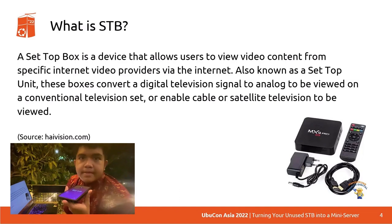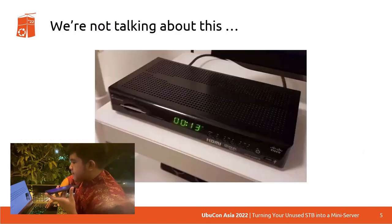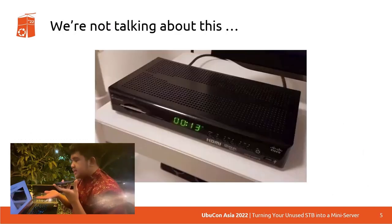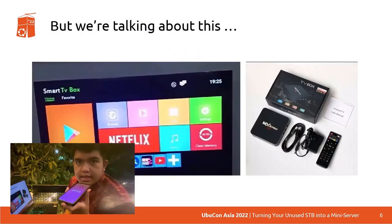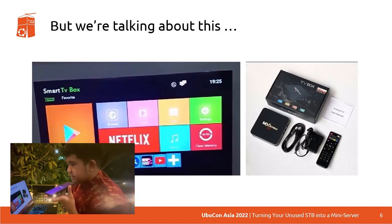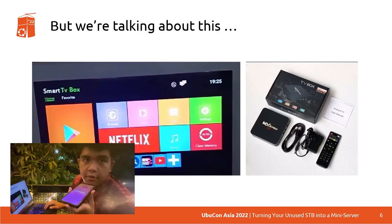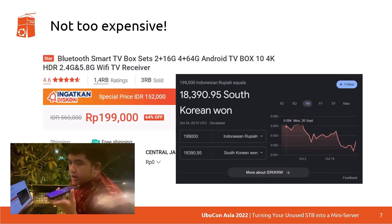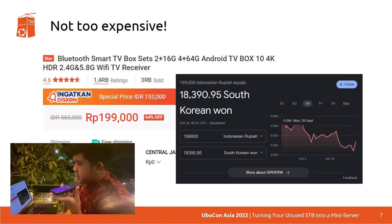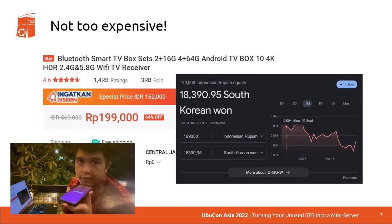The main purpose of an STB is that it converts digital signals to analog TVs. But right now we're not talking about those kinds of STBs — we're talking about the smart ones that run under the Android operating system. It kind of looks like this image I found on Google, so it's a bit different from what I will modify. It's actually not too expensive — on my local e-commerce site, a smart TV box running Android TV costs only 199,000 rupiah, or around 18,390 South Korean won.